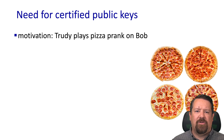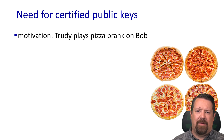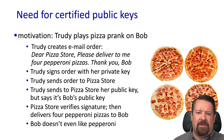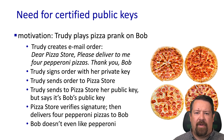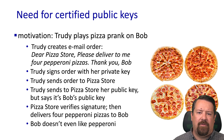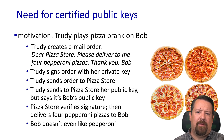As one more example: Trudy plays a pizza prank on Bob. She creates an email order to the pizza store — 'Please deliver to me four pepperoni pizzas. Thank you, Bob' — impersonating him. Trudy signs the order with her private key, sends it to the pizza store along with her public key, but claims it's Bob's public key. The pizza store verifies the signature — Trudy sent both, so of course they match — and delivers four pepperoni pizzas to Bob, who doesn't even like pepperoni pizza.